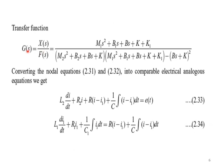Finally, the transfer function G(s) = X(s)/F(s) equals [M1·s² + B1·s + B·s + K + K1] divided by {[M2·s² + B2·s + B·s + K][M1·s² + B1·s + B·s + K + K1] − (B·s + K)²}. This is the transfer function obtained for the system.